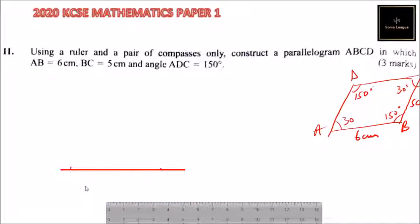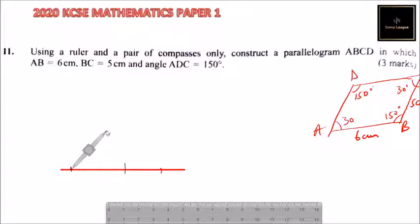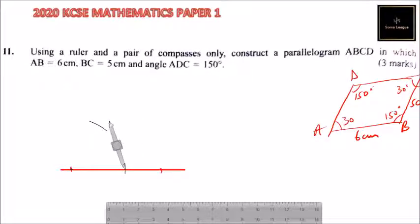With that, we can construct angle 30 degrees. How do we construct angle 30? We construct angle 30 by bisecting an angle of 60. So we are going to use a compass here, and using the compass we make an arc, then we rotate our compass and make another arc there. Shift your compass and make another arc there.